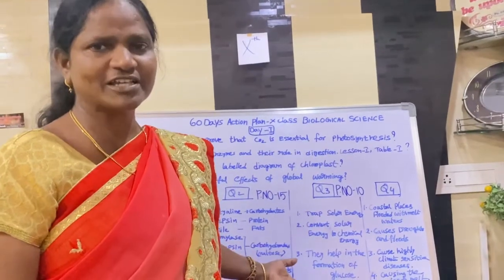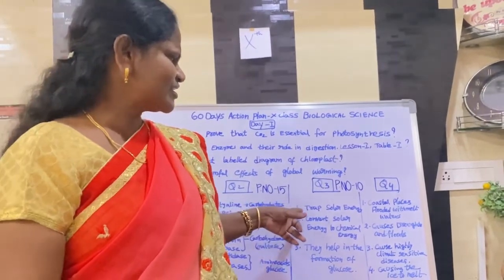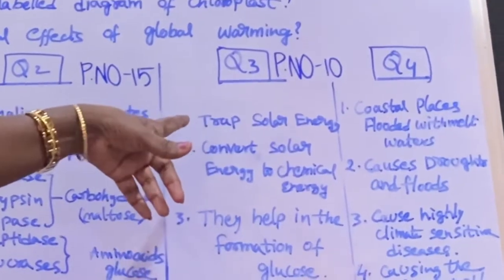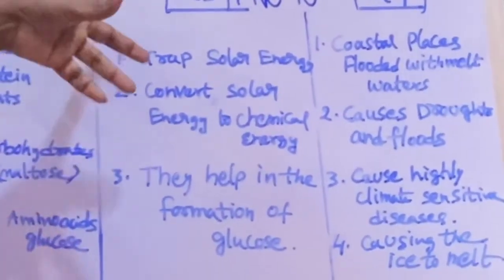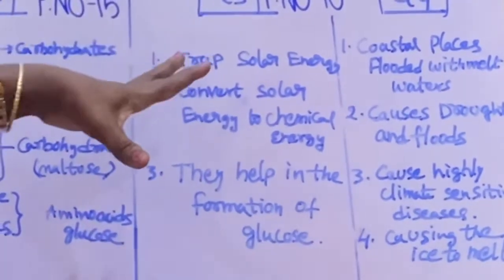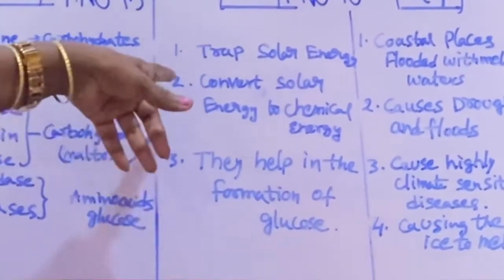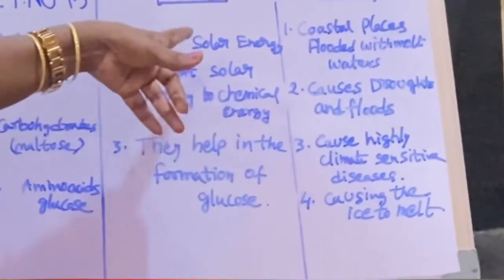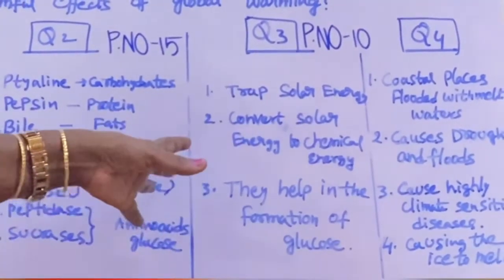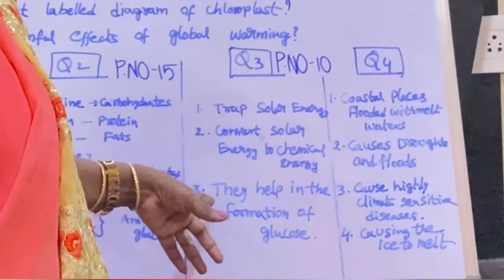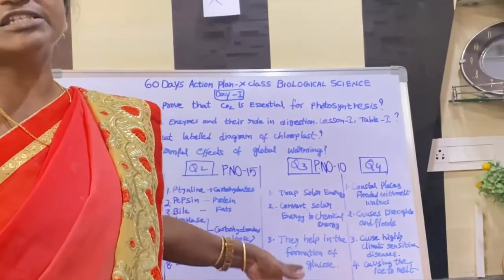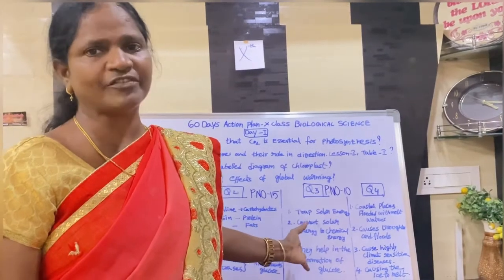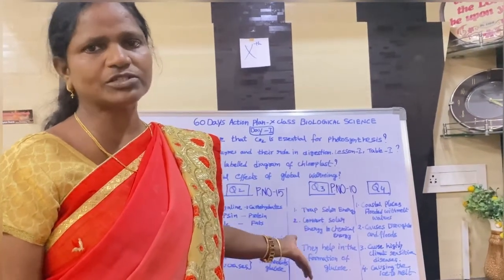There are three main points for the chloroplast answer. First: trapping solar energy — this happens in the grana thylakoids. Second: converting solar energy to chemical energy — this also happens in the grana thylakoids. Third: they help in the formation of glucose. Write these three points in an elaborated way and you can get full marks for the question.